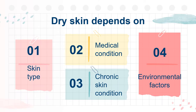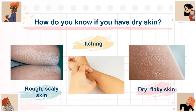The incidence of dry skin increases with age, but can occur at any age depending on skin type, medical condition, chronic skin condition, and environmental factors. You have dry skin if you have rough, scaly skin, itching, and dry, flaky skin.